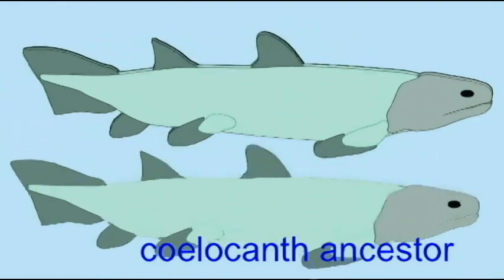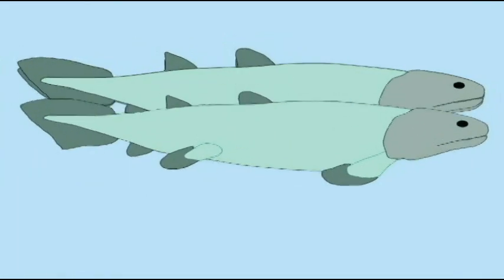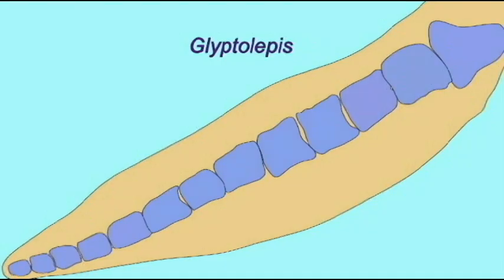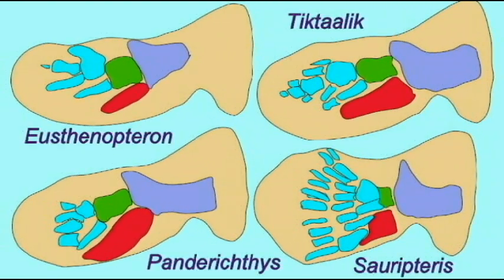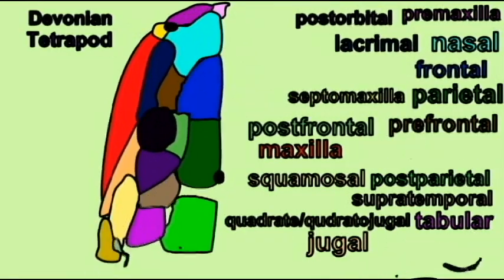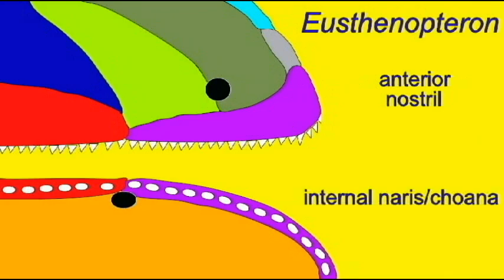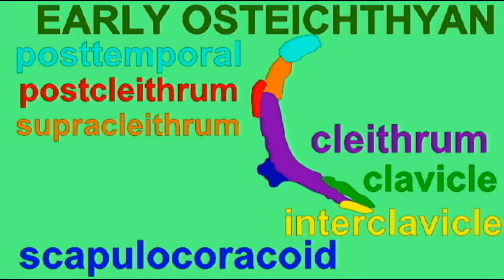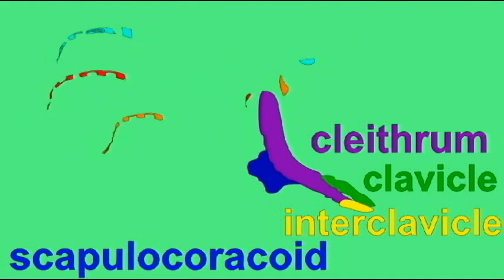Perhaps the best example of transitional forms are the Sarcopterygian fish of the Devonian period. We see a group which slowly becomes more adapted to life on land: they develop lungs, the bones in their fins are homologous to the bones present in the arms and legs of amphibians, and they modify the positions of their eyes, nose, and ears to be homologous with amphibians adapting their senses for life on land. In many ways, these Sarcopterygian fish of the late Devonian are more similar to the first amphibians than to any fish alive today. These fish offer a clear set of transitional forms, intermediate in their complexity and lifestyle, showing how the evolution of fish into tetrapods occurred.